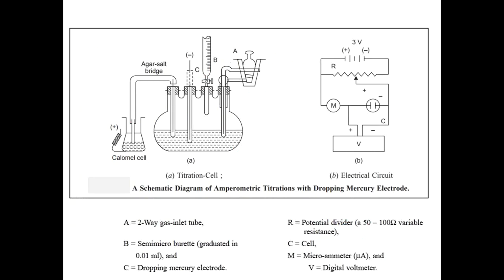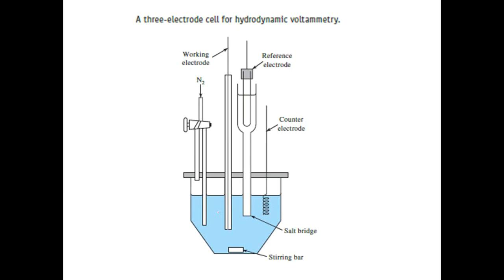For instrumentation, either a dropping mercury electrode can be used for amperometric titration, where the dropping mercury electrode is in the system along with a reference electrode (a calomel electrode), and the reagent is added from a microburet or semi-microburet into the electrolytic cell. Another instrument uses hydrodynamic voltammetry — a three-electrode assembly with a working electrode, reference electrode, and counter electrode — where the solution is stirred, so a convection current is also involved.